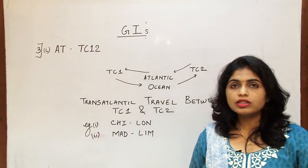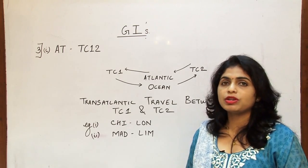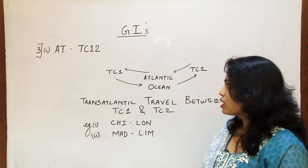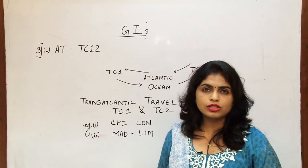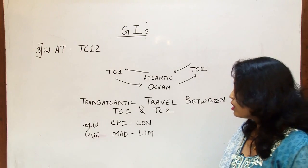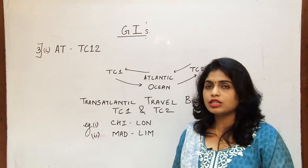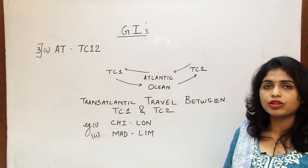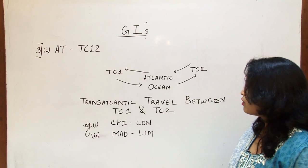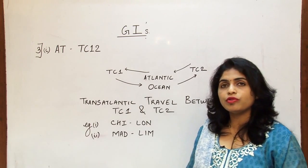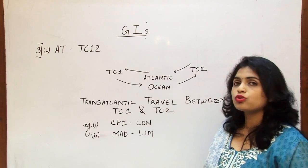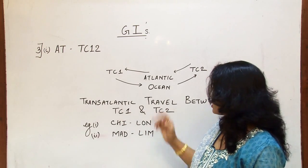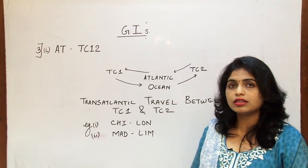Let us check the third global indicator, which is denoted by the letters AT — that is transatlantic routes. There are four cases or four different combinations where AT may occur. The first case is AT where travel is between Traffic Conference Area 1 and Area 2, so any flight crossing from Area 1 to Area 2 will be crossing over the Atlantic.